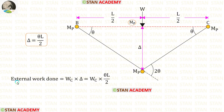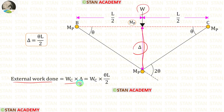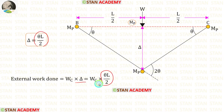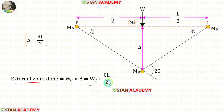Now let us find the external work done. We multiply the load W with the displacement δ. For δ we apply θL/2. So the external work done equals Wc·θL/2.